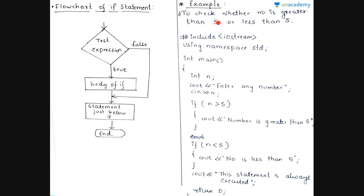Now let us see a simple example to check whether a number is greater than 5 or less than 5. We use #include iostream, and as I mentioned in my last lesson on program structure, we use iostream and 'using namespace std'. In the main function, we are going to write our program code.